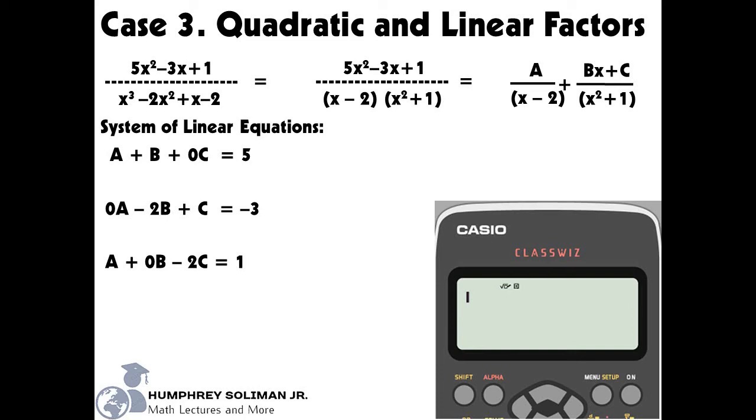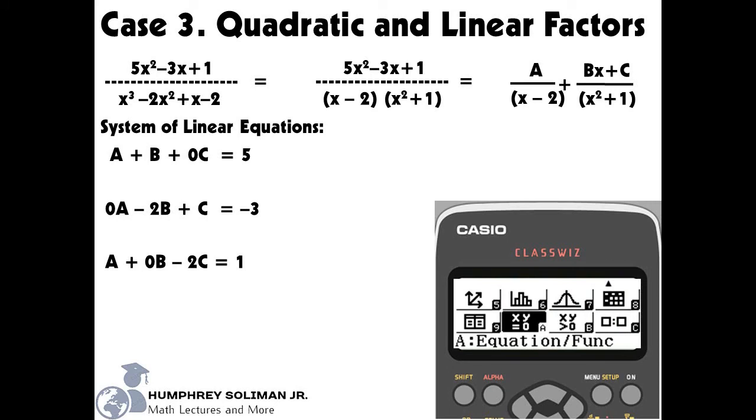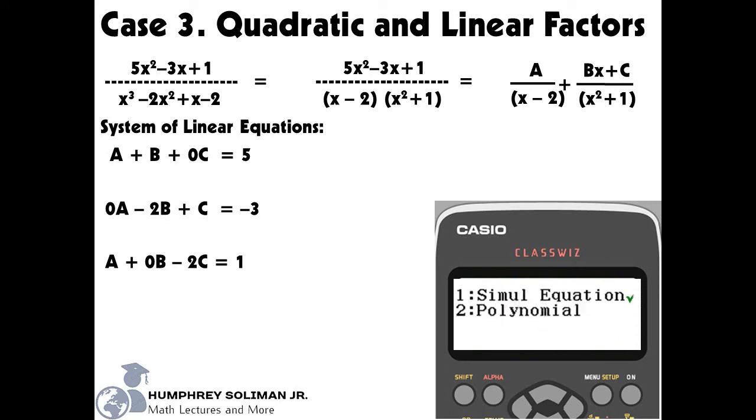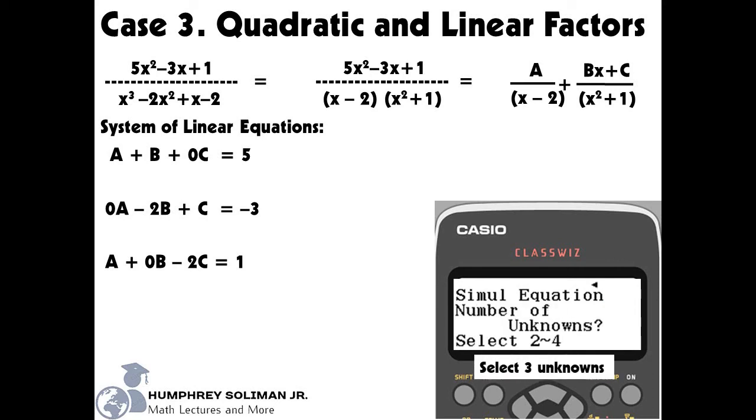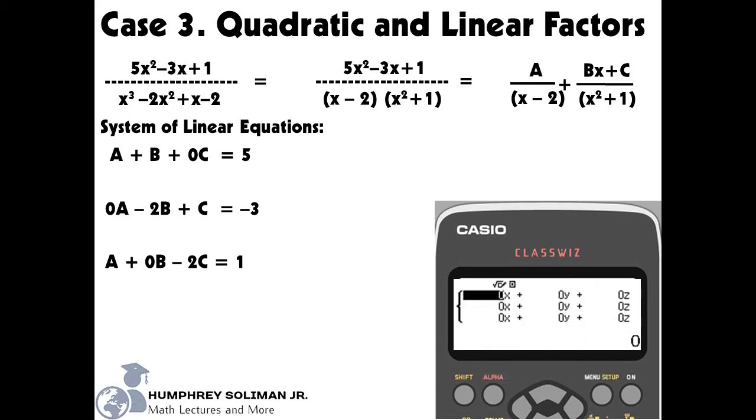We will now use the Casio ClassWiz calculator to find the values of a, b and c. First step is to put the calculator in equation mode. Second, we will select the option 1, simultaneous equations. Third, we will select the number of unknowns we have in our system, which is 3. We are now ready to input the coefficients and constants for each of the equations of our system.